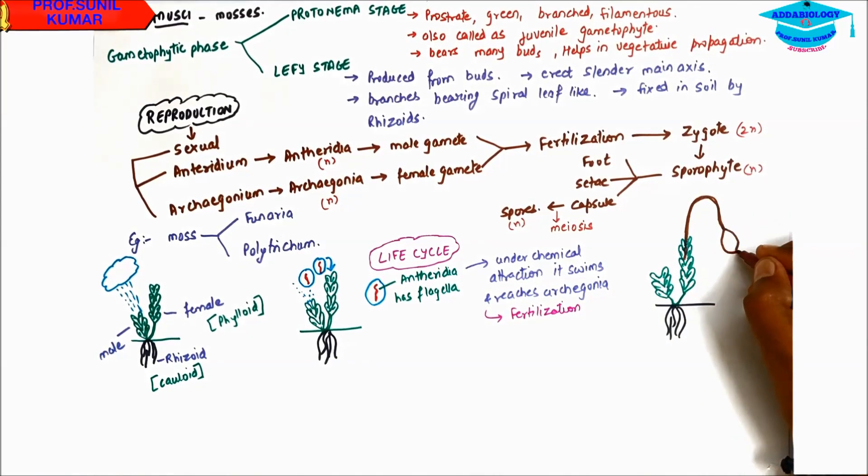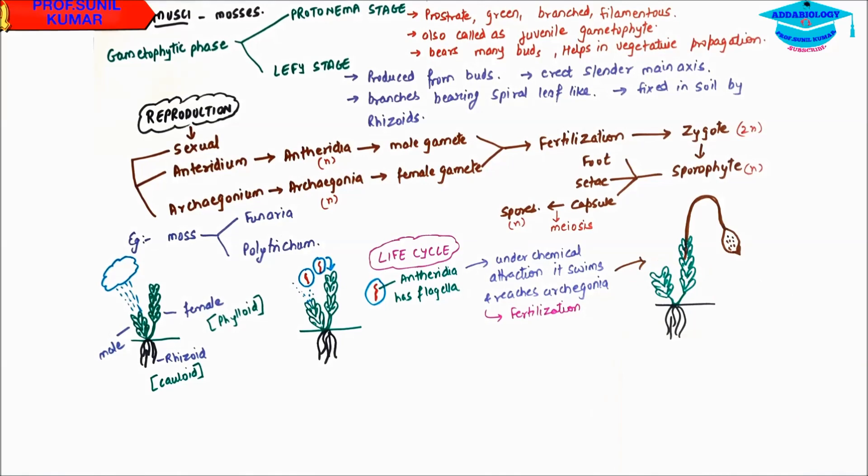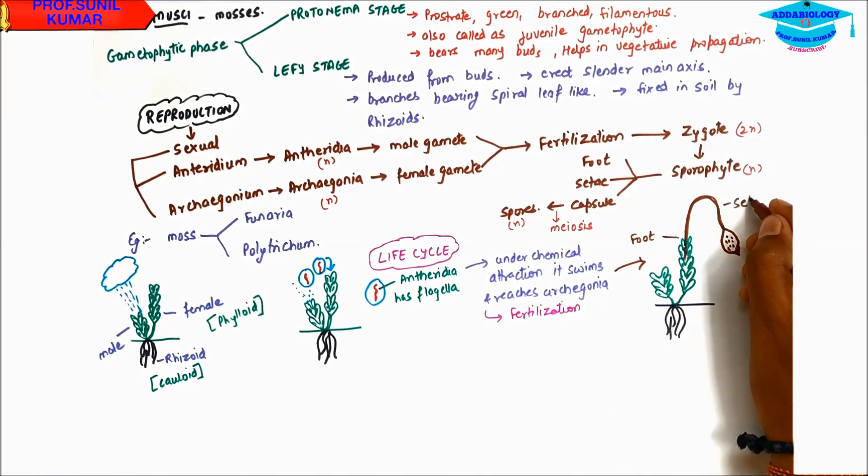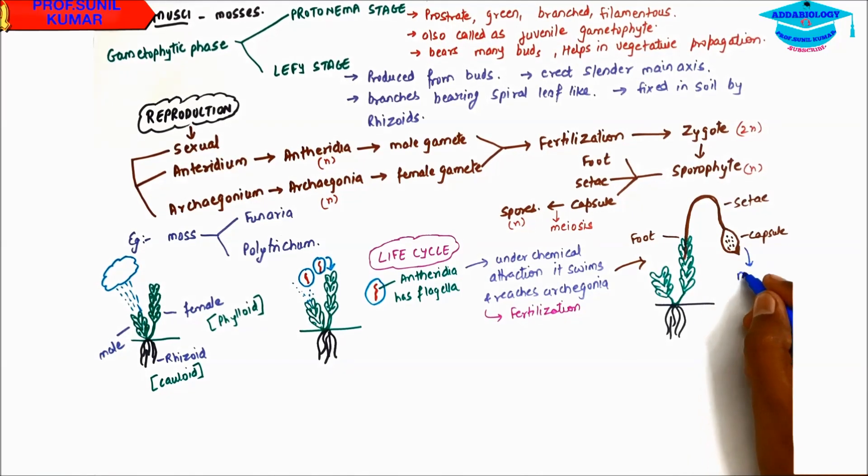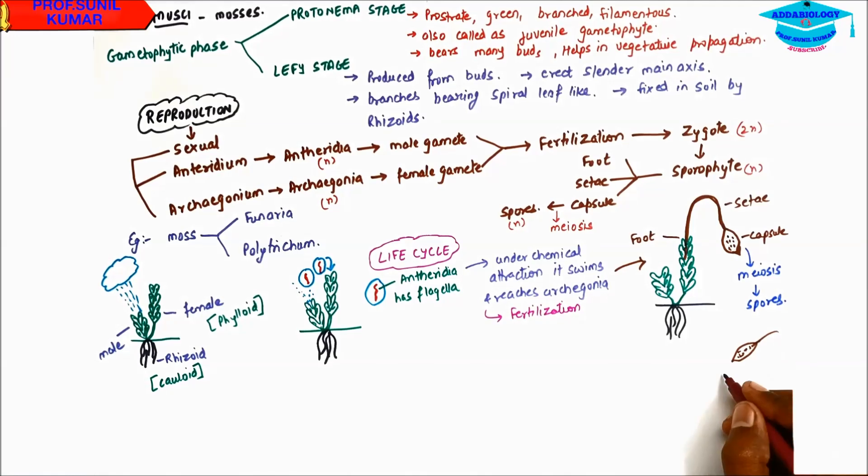So the fertilization is under chemotactic movement where the male gets attracted towards the female with the help of water molecule it swims. Let us assume this to be the fertilized part, and after fertilization it gives rise to three important parts: that is called foot, seta, and capsule. So this is the sporophytic generation of the bryophytes.